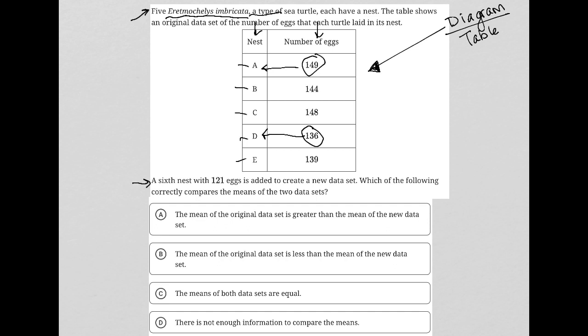The next part of this question says a sixth nest with 121 eggs is added. Okay, well if it's added, then I want to add it. Let's just draw a line here. That means we'd have nest F, and in nest F there would be 121 eggs. So a sixth nest with 121 eggs is added to create a new data set, which of the following correctly compares the means of the two data sets.